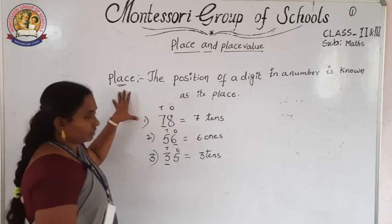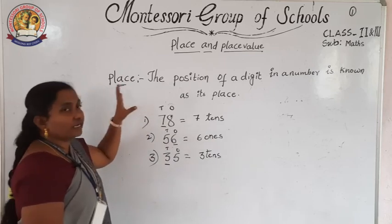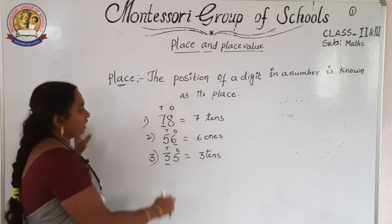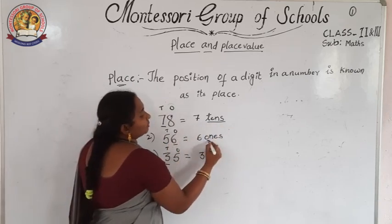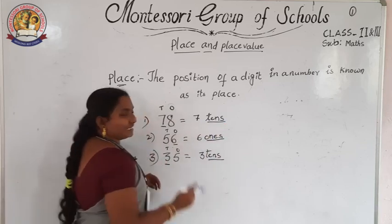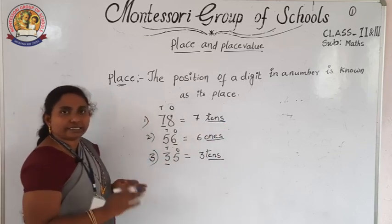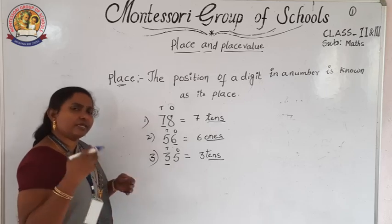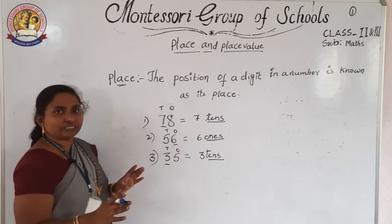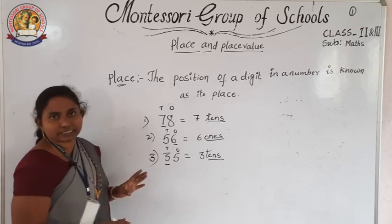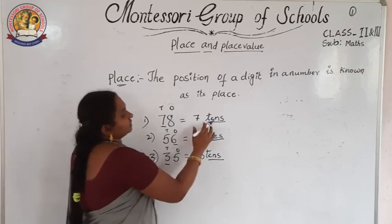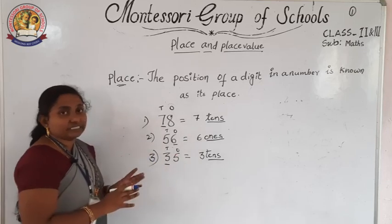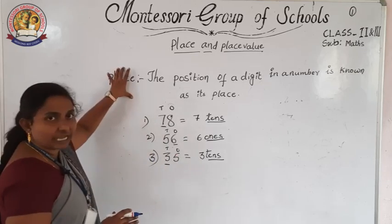When the question asks to find out which place a digit is in, you write only the place — either tens or ones. In your syllabus, only tens and ones places are there, so I will explain only 2-digit numbers. This is the concept of place.